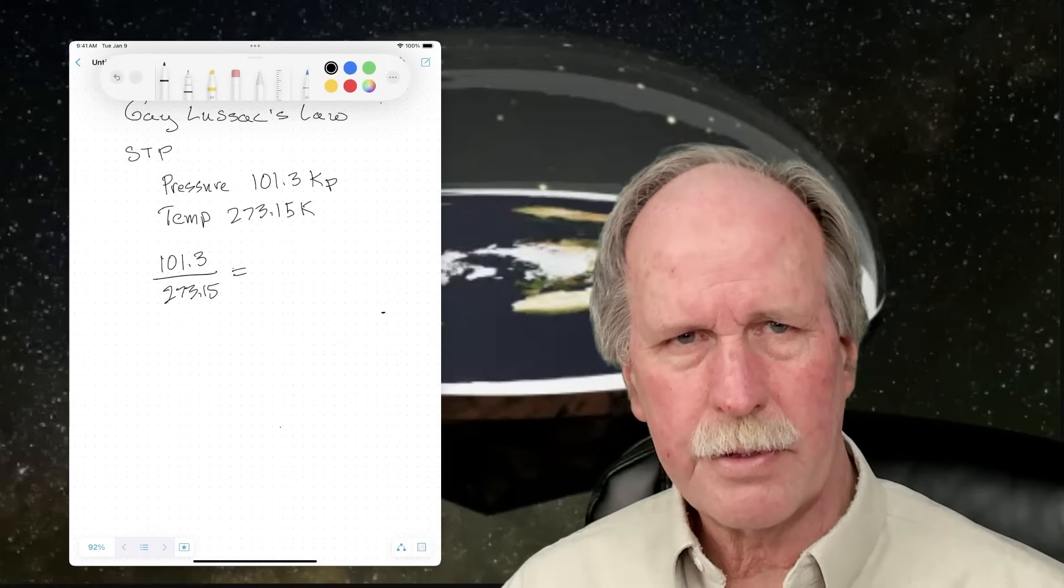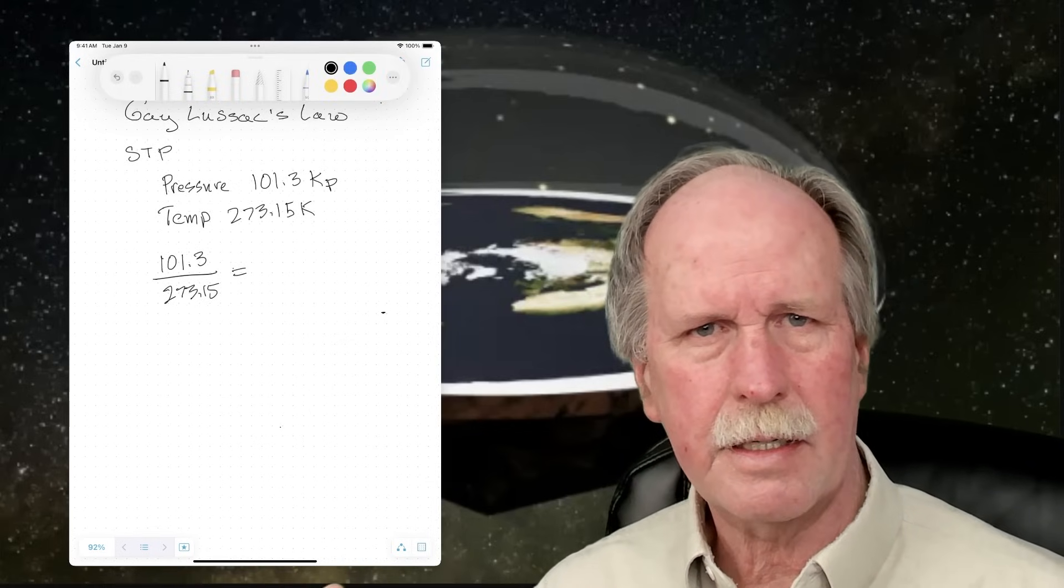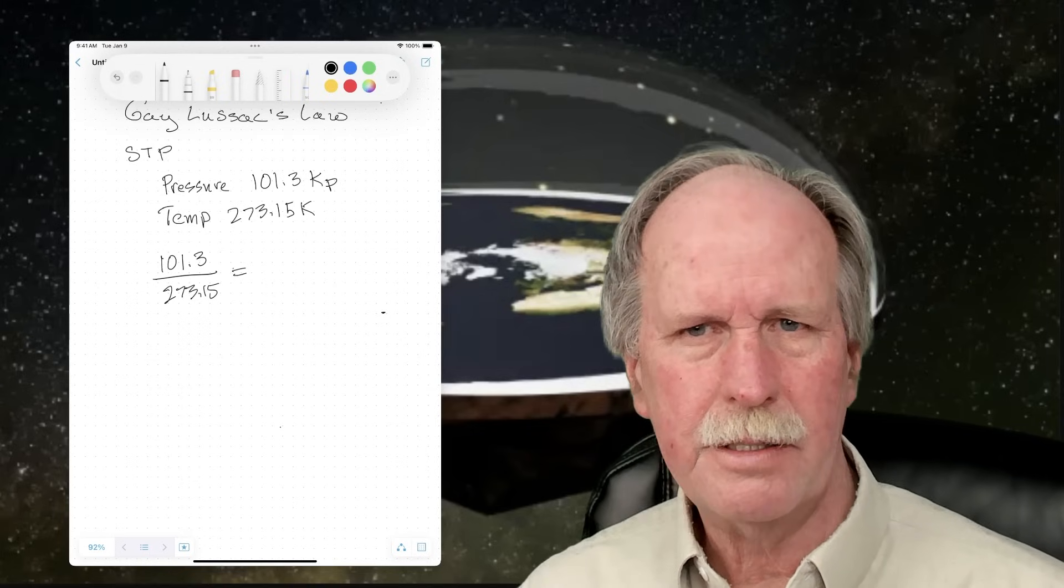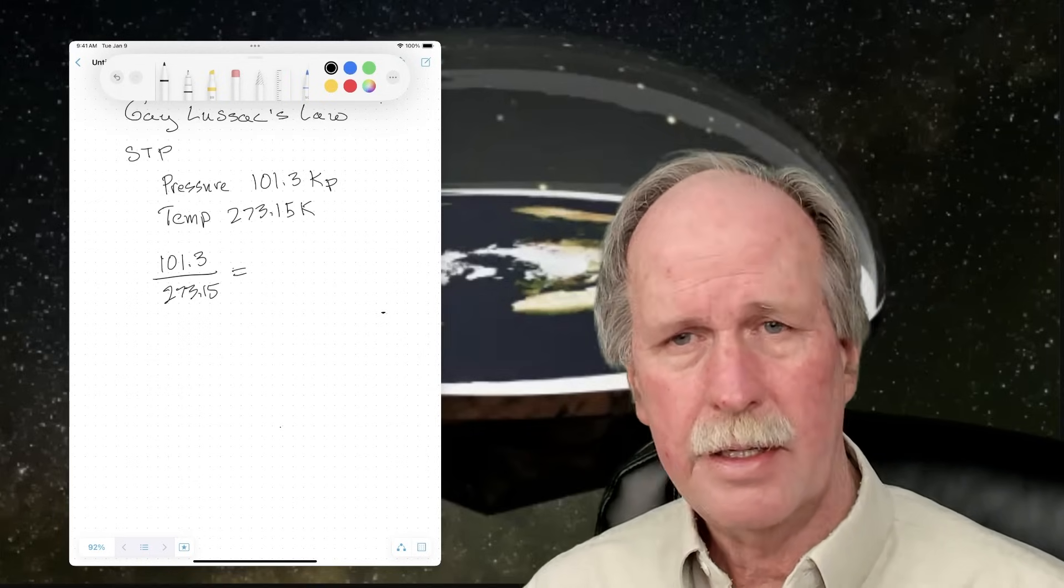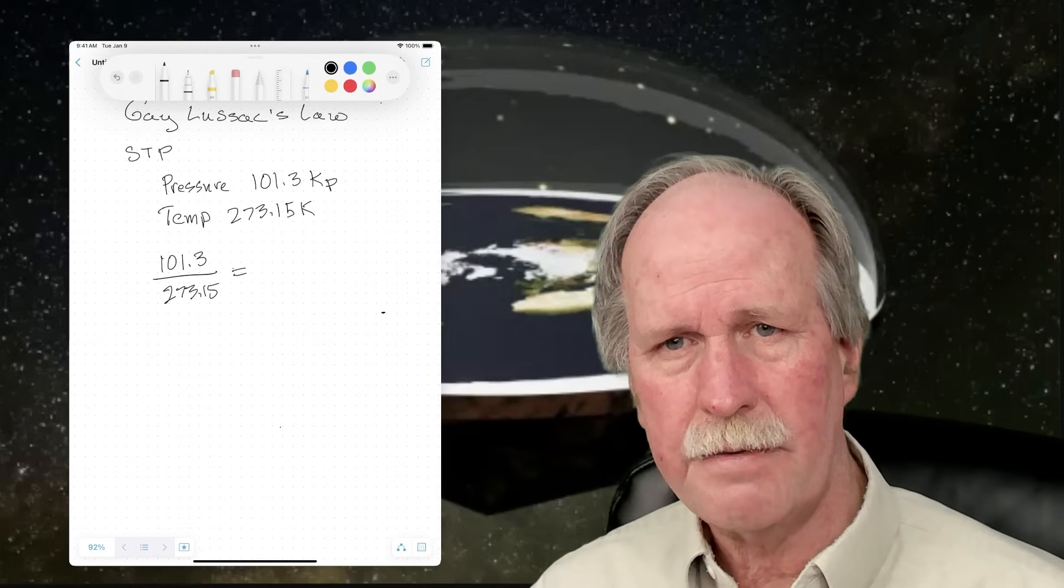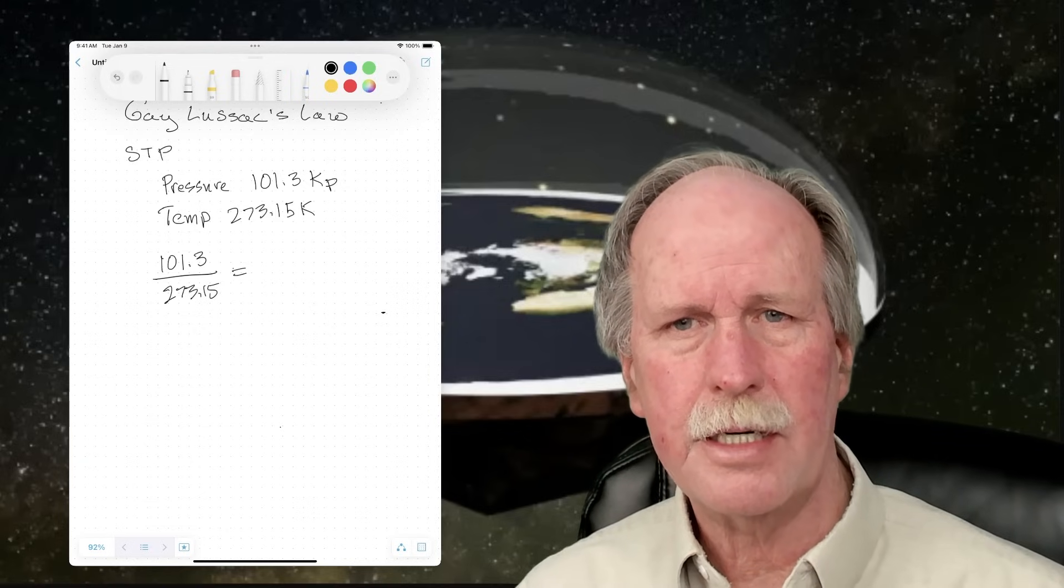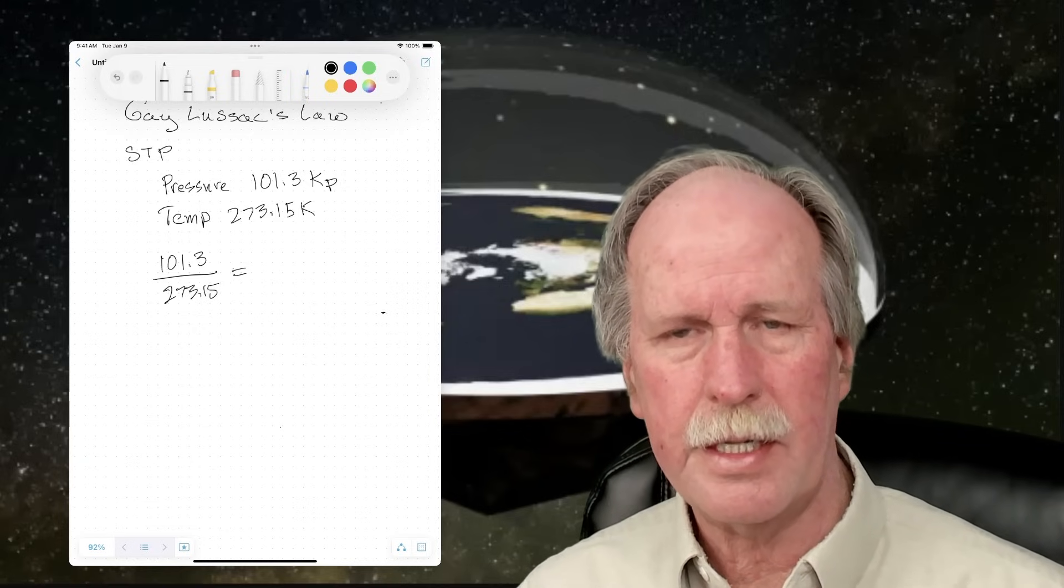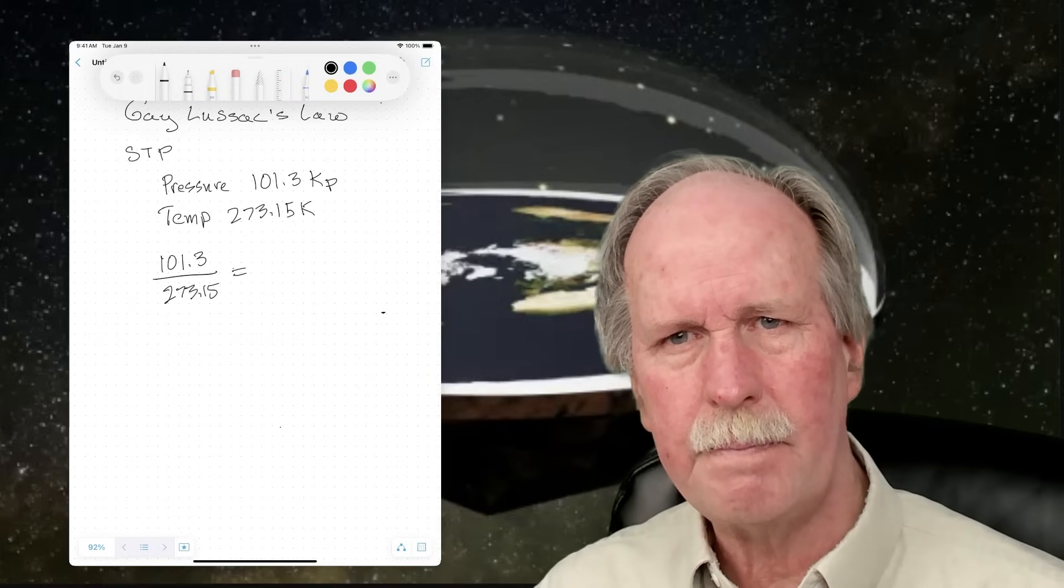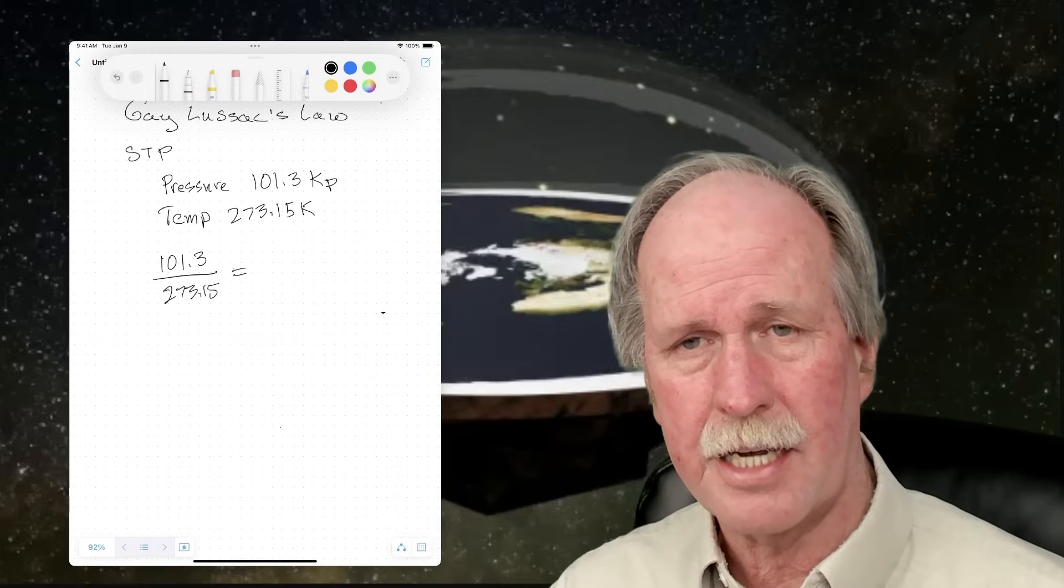Now standard temperature and pressure is given as 101.3 kilopascals. A pascal is one newton per square meter, and a kilopascal is a thousand pascals. And the temperature is given in Kelvin, which is 273.15 degrees. That's zero degrees Celsius.